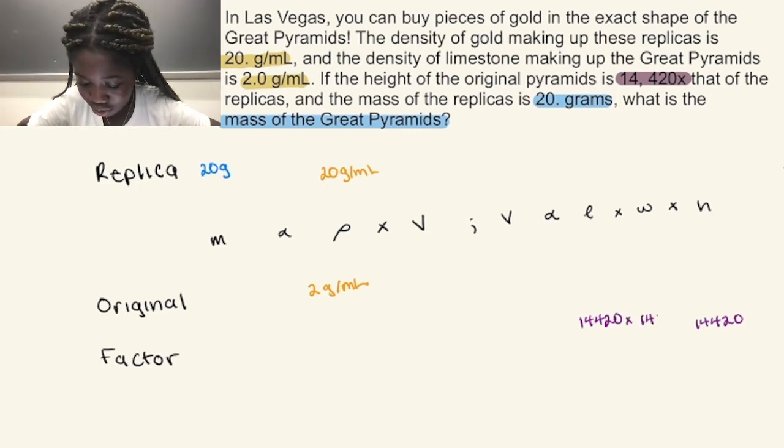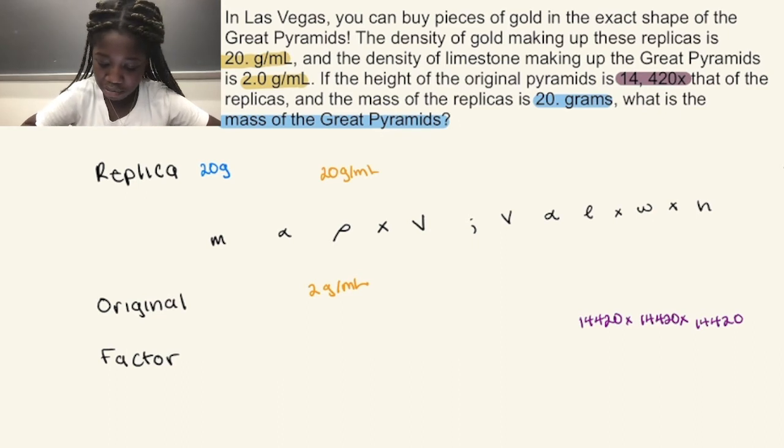And now we have all the components to find the factor for volume. I'll write an equal sign because the factor line always has an equal sign. And thus, if you multiply this out, the factor for volume is 3 times 10 to the 12th.